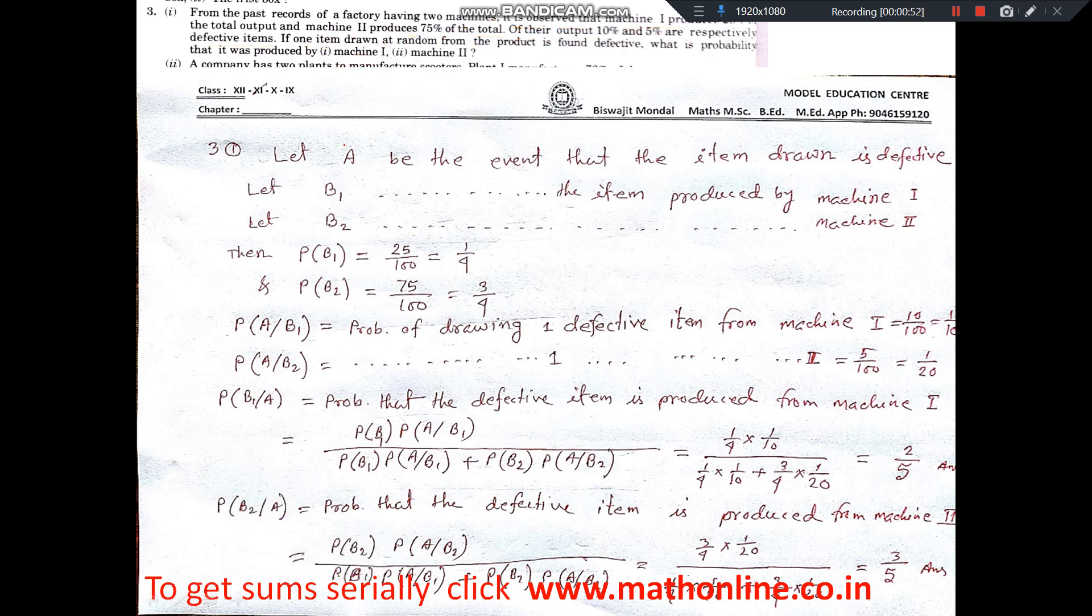So, let A be the event that the item drawn is defective, because this is the condition. This condition we have to write first. Then B1 is the event that it is produced by machine 1, and B2 is the event that it is produced by machine 2.